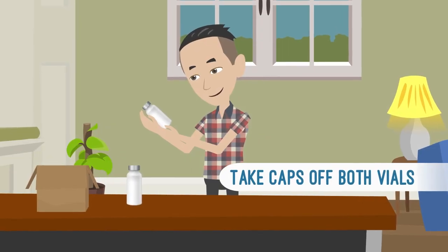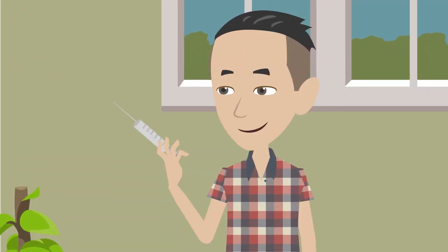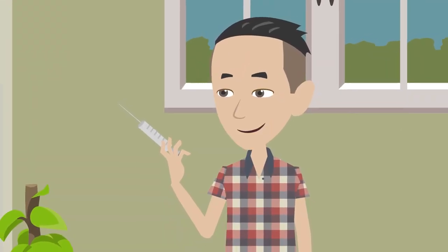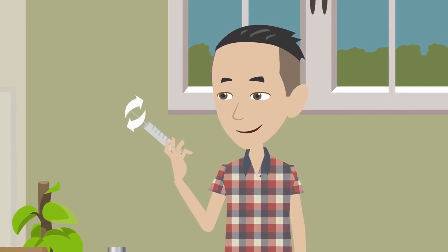Take caps off both vials. Clean both with alcohol swab. Pull cap from large mixing needle or hold barrel of mix needle and turn or twist the cap clockwise so it's secure.